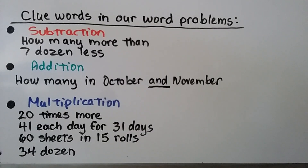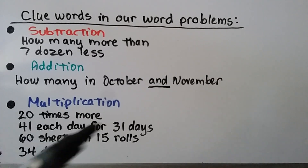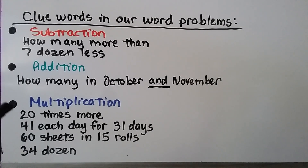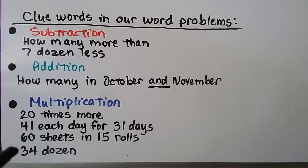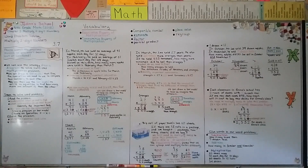We had some clue words in our word problems. Subtraction clue words included 'how many more than' and '7 dozen less.' Addition clue words included 'how many in October and November.' Multiplication clue words included '20 times more,' '41 each day for 31 days,' '60 sheets in 15 rolls,' and '34 dozen' — because we had to multiply by 12, which is a dozen. When solving word problems, look for clue words that help you choose the operation, and draw a diagram or bar model to help you imagine the problem.